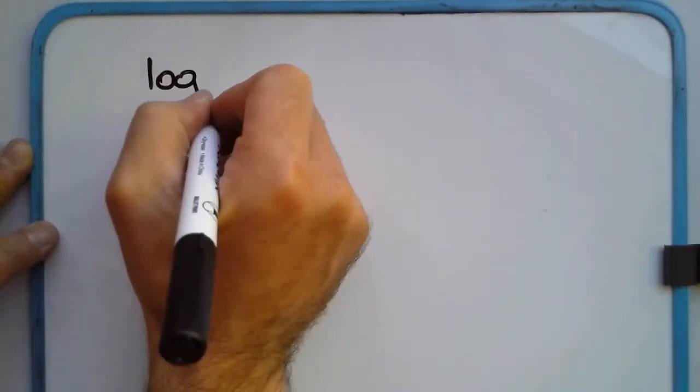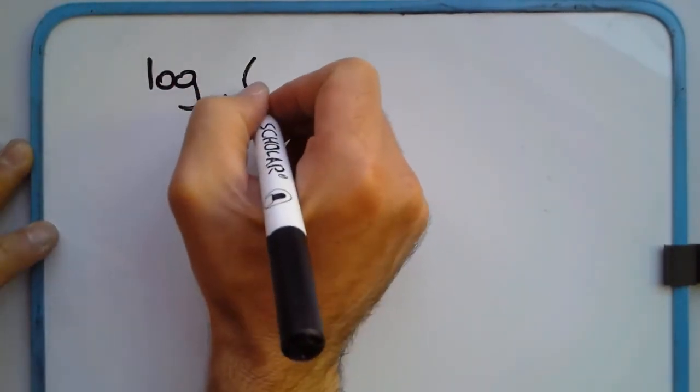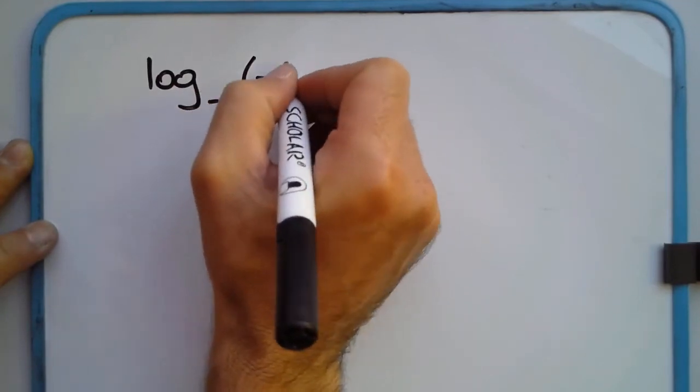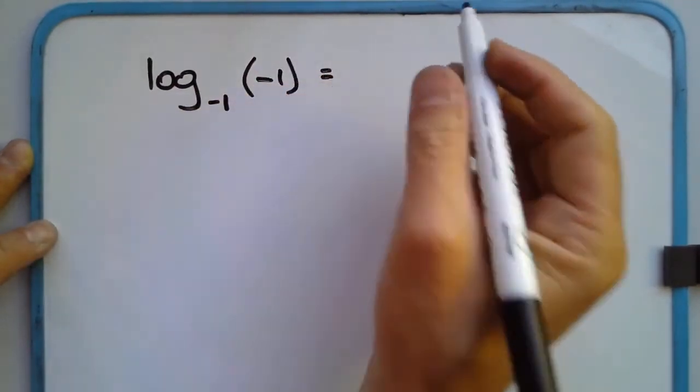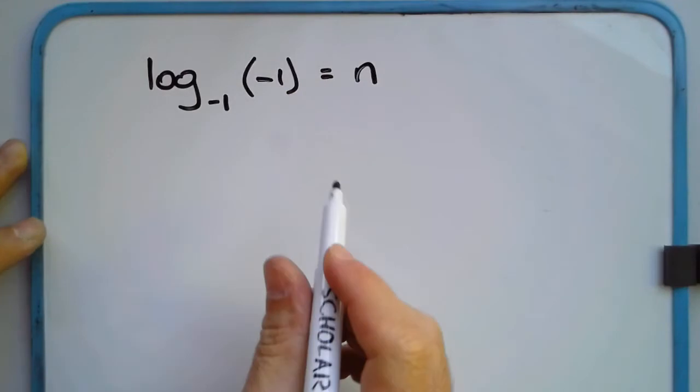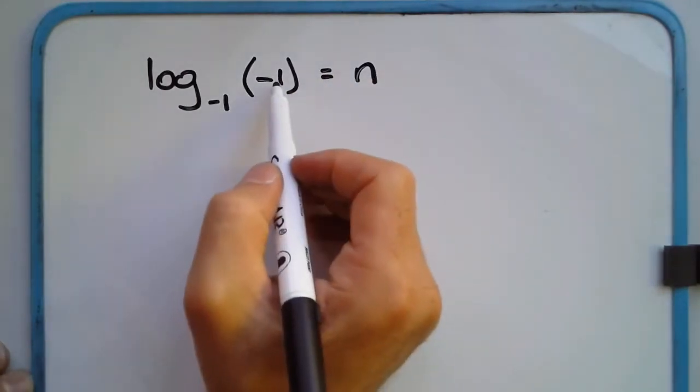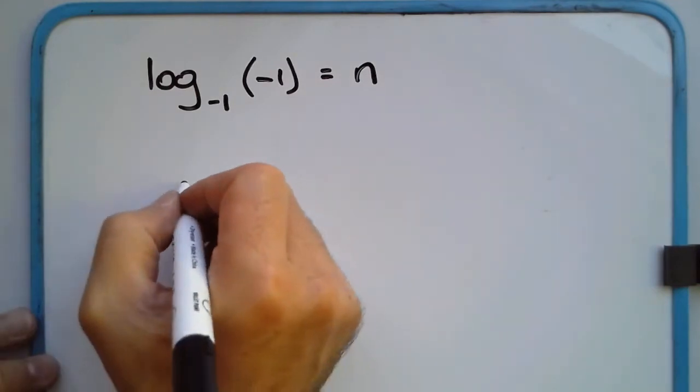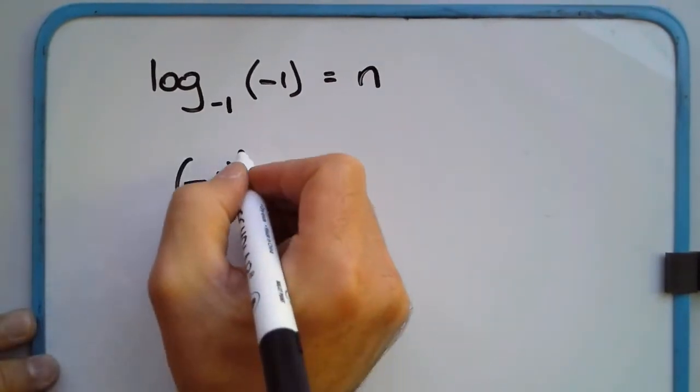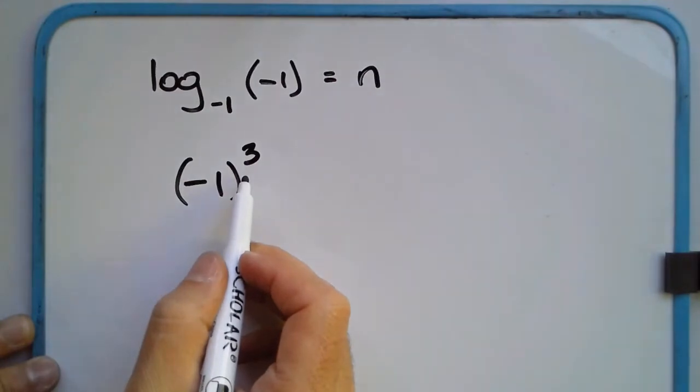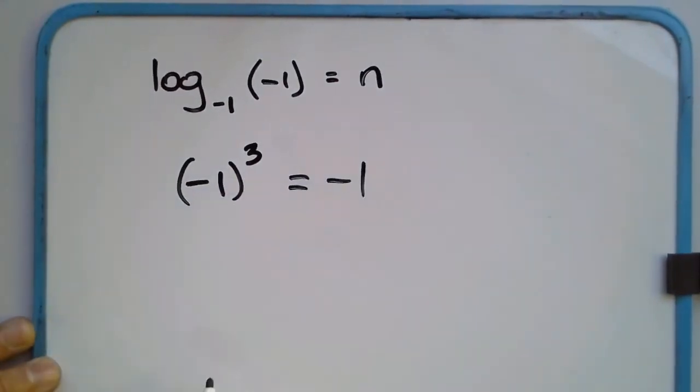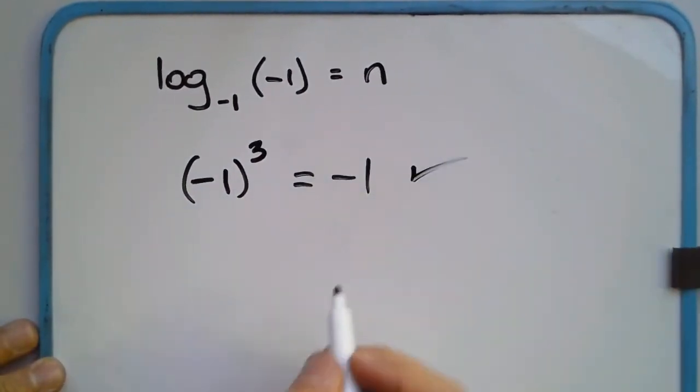What about, say, for example, log base negative 1 of negative 1 is equal to n. Can we find an n so that when you raise negative 1 to the power of n, we get negative 1? And sure, of course, that's going to work. We can do that. One example would be 3, or 1, for example. Negative 1 to the power of 3 is equal to negative 1. So that works.